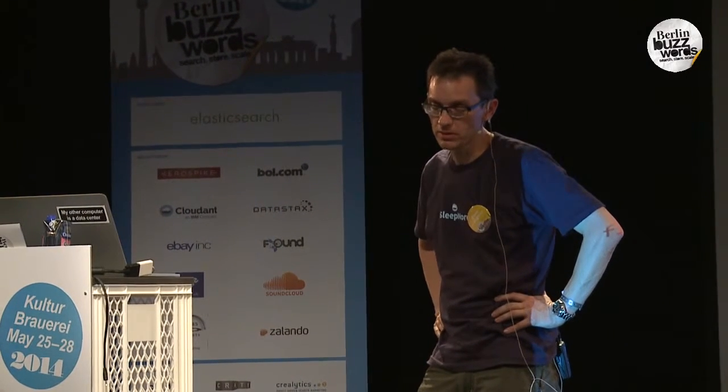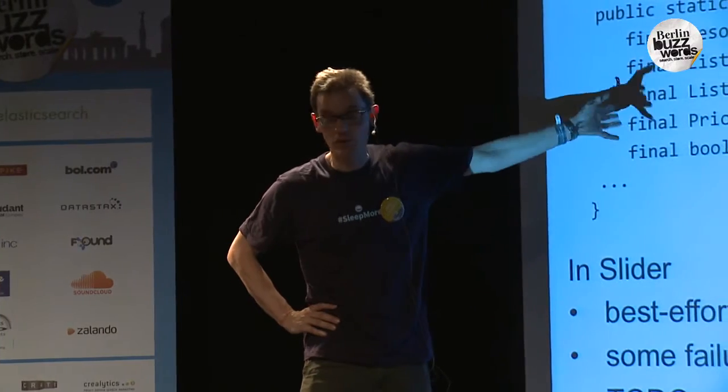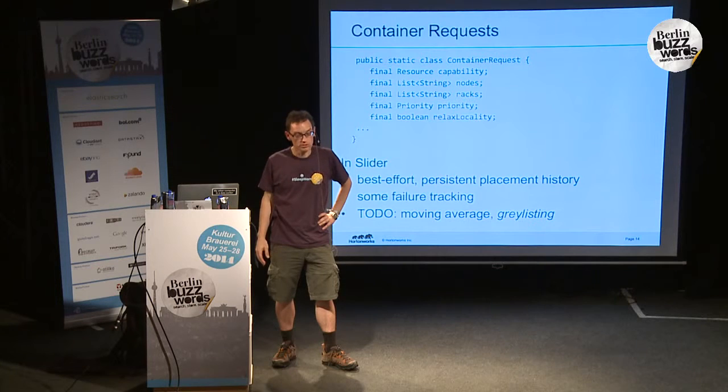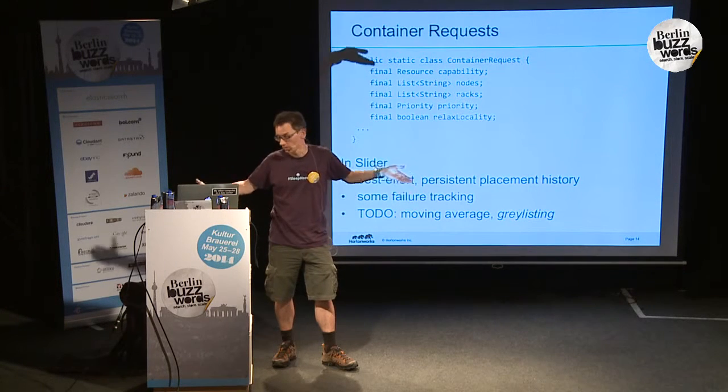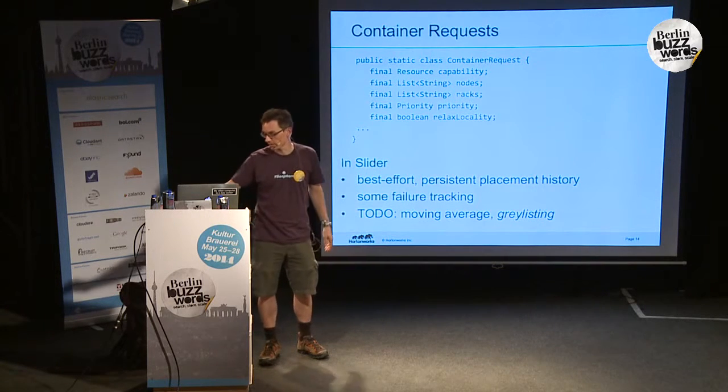One thing we've been working on is improving failure tracking. If something fails, what do we do? Can we say, when we get it back, we don't want it? MapReduce engines have a nice simple notion of blacklisting — this machine is too slow, I'm not going to use it. We're being more subtle, keeping moving averages. Rather than saying a box works or doesn't work, we have a notion of this box is a bit unreliable, but in a small cluster you might as well take it anyway.